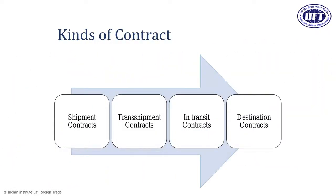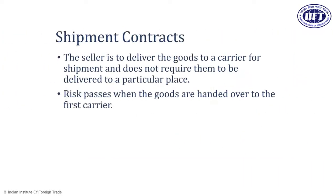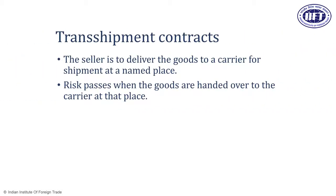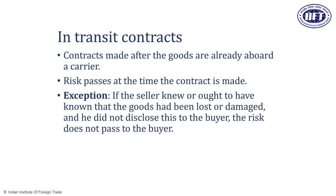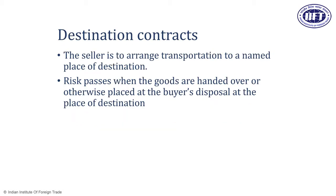Globally, contracts in international trade are majorly governed by Incoterms. We may have shipment contracts, trans-shipment contracts, in-transit contracts, and destination contracts. These are broad names used during negotiation to understand which Incoterm is being used in a particular contract — there is no hard and fast rule that you must title your contract according to these classifications.